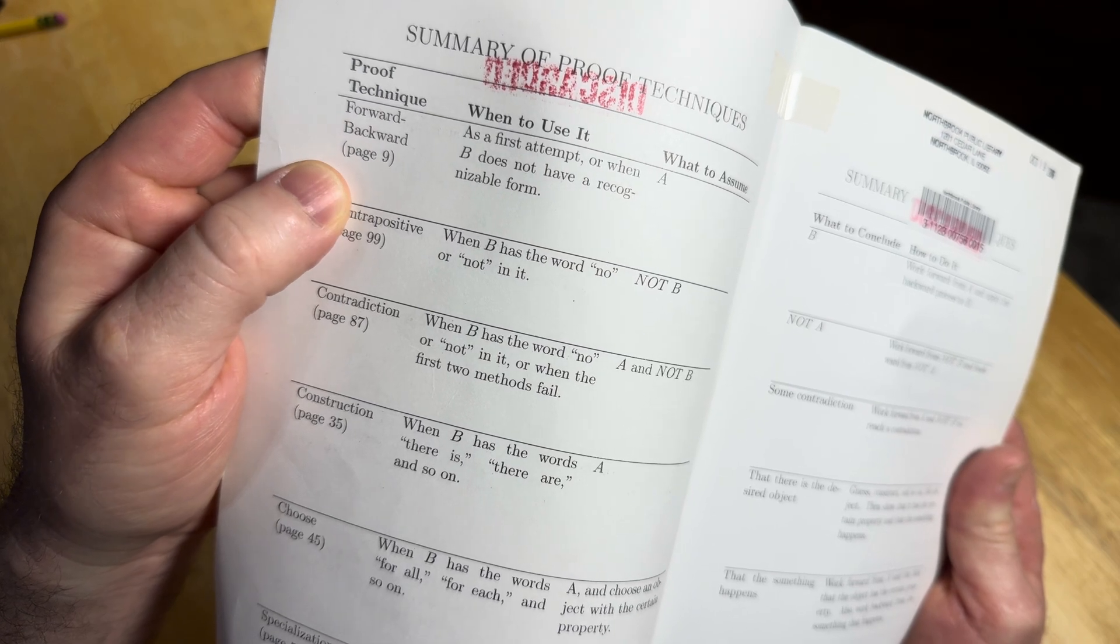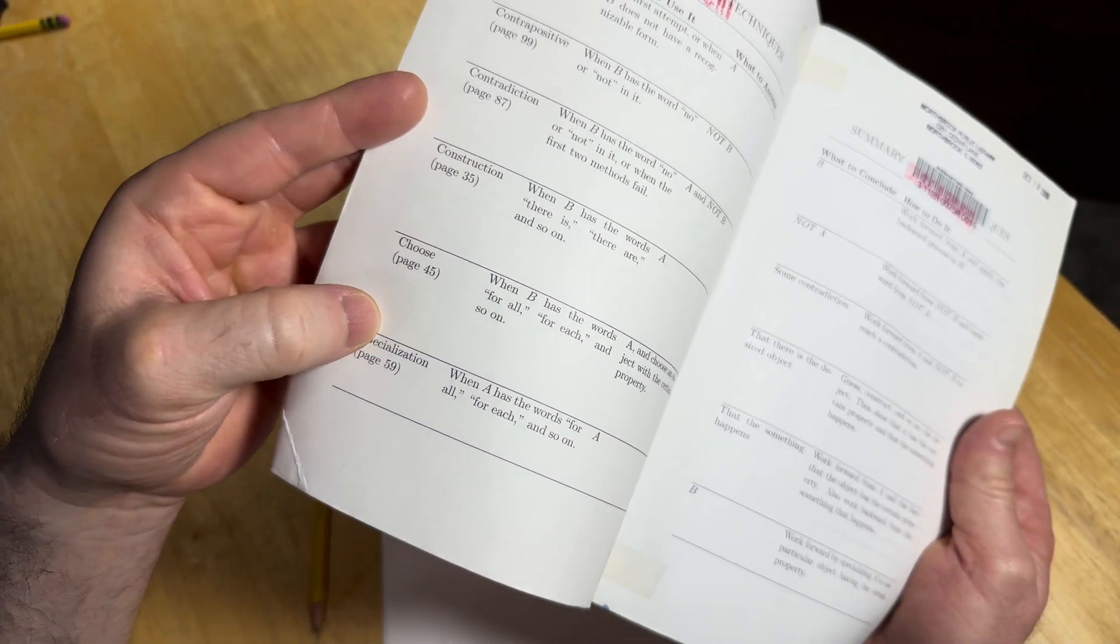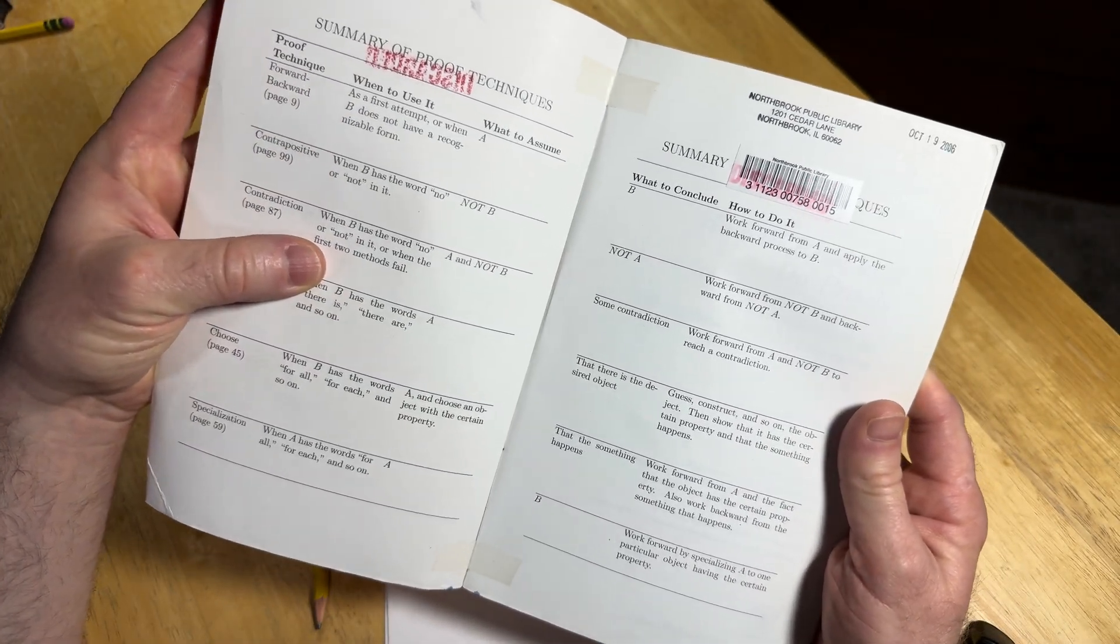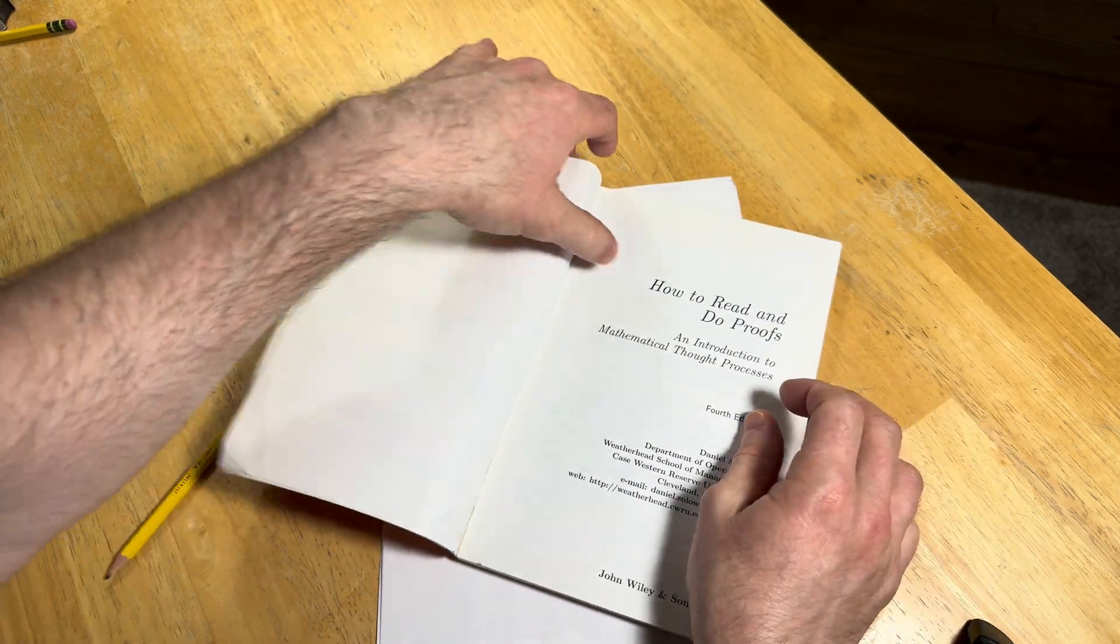You have the forward backward method, the contrapositive, contradiction, construction, choose, and specialization. So let's go ahead and go a little further.